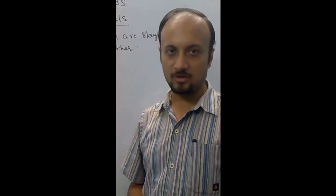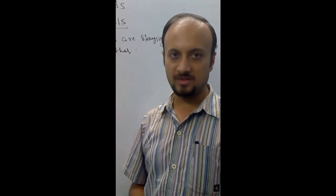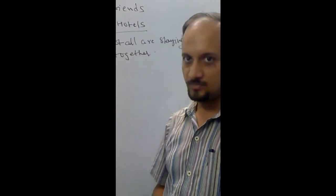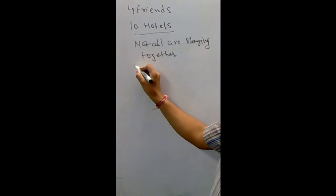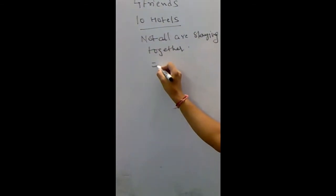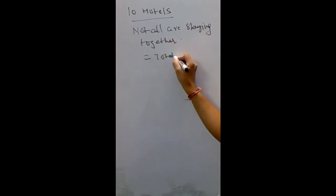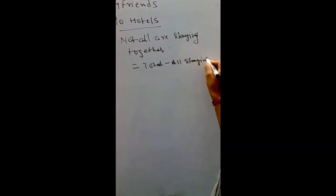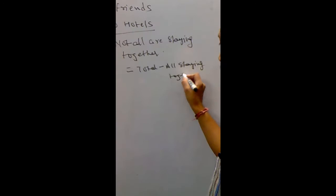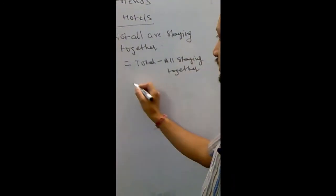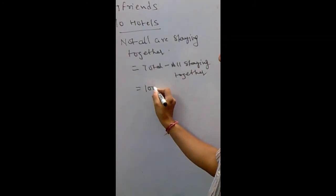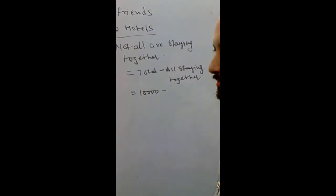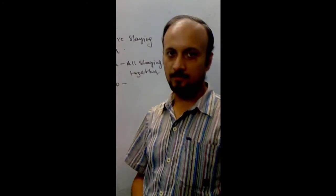You will find out the total number of ways and subtract from them the total number of ways in which they can stay together. What I said is, not all are staying together. It is as good as total minus all staying together. So, total is something which we already have for this data. That is ten thousand. Let us find out the number of ways in which they can stay together.